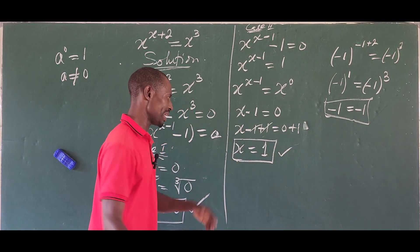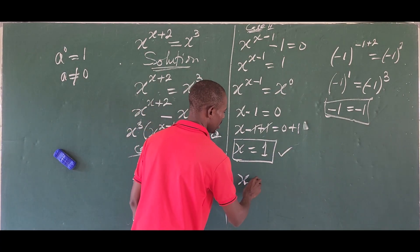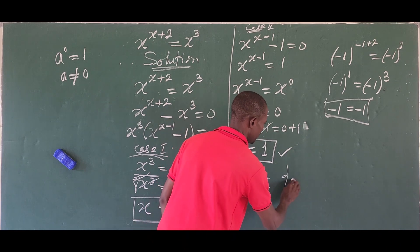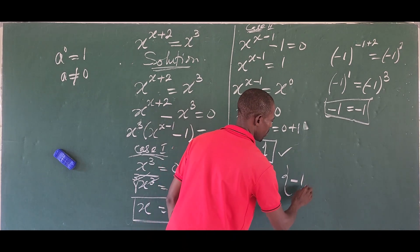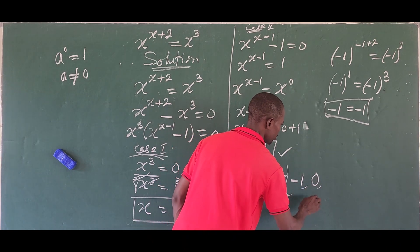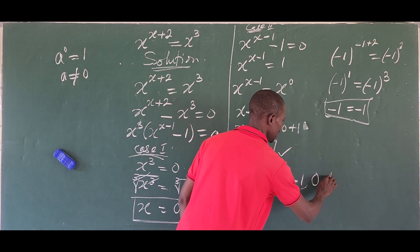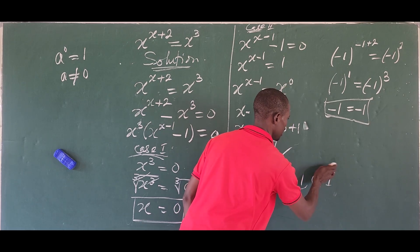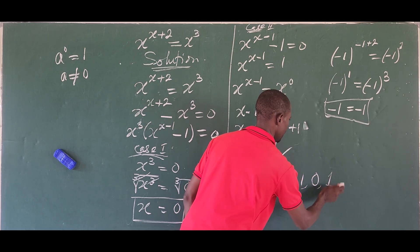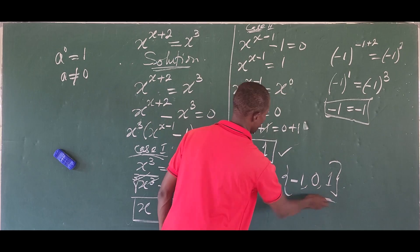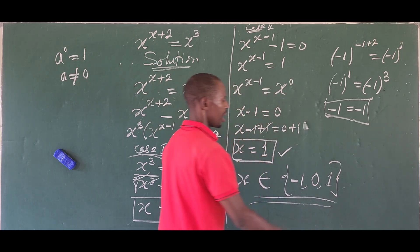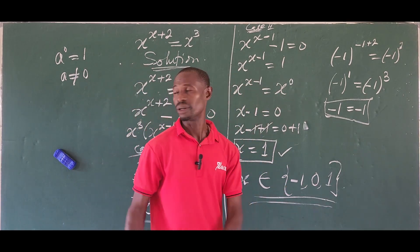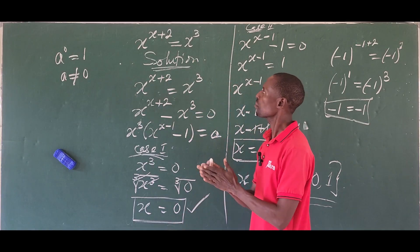So we can say that x belongs to the set: minus 1, 0, and 1. These are the three values of x for this exponential challenge.